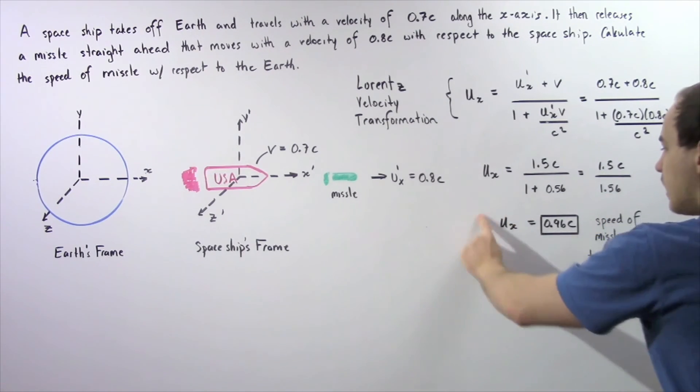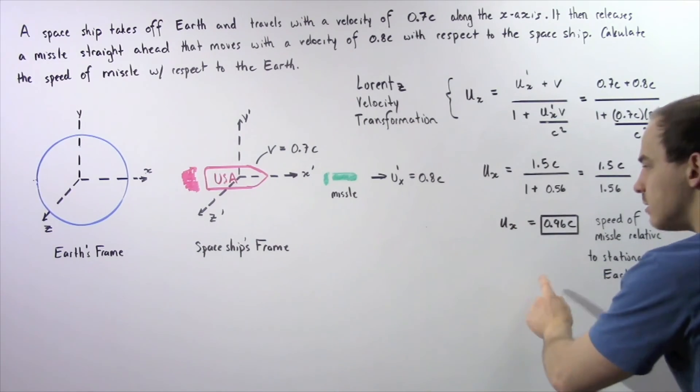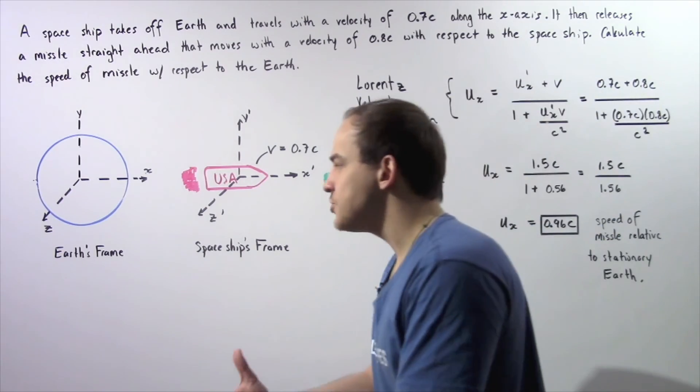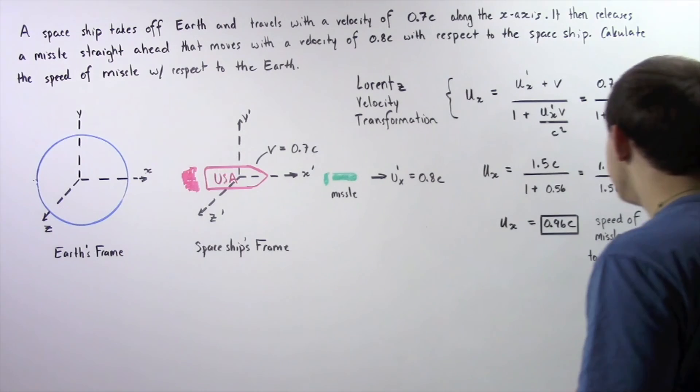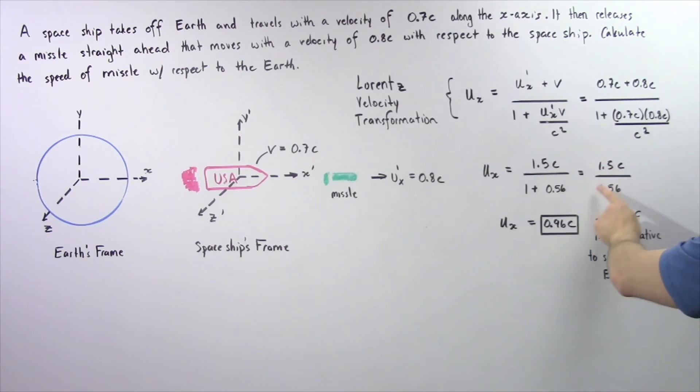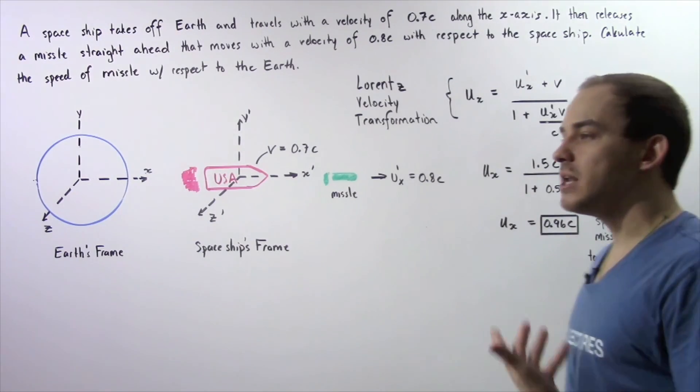Finally, the velocity of our missile with respect to the stationary frame, our Earth, is equal to 1.5c divided by 1.56, and that is about 0.96c. That means the speed of the missile relative to the stationary Earth is about 96% of the speed of light in a vacuum.